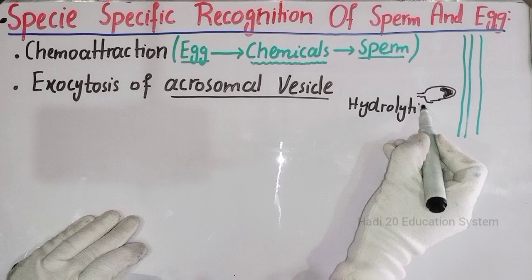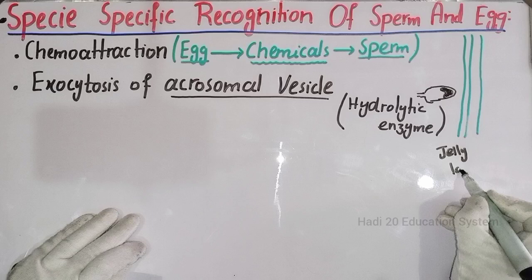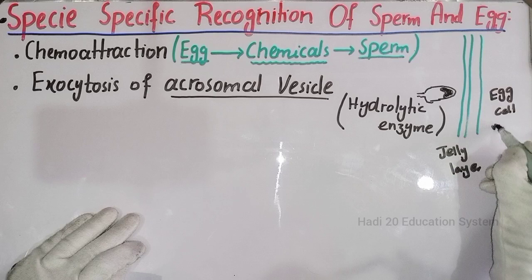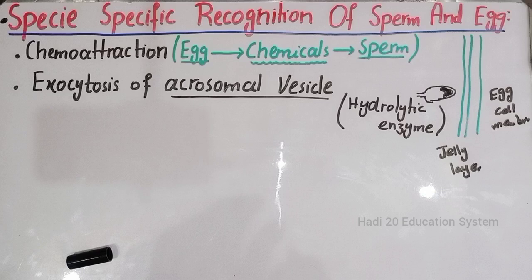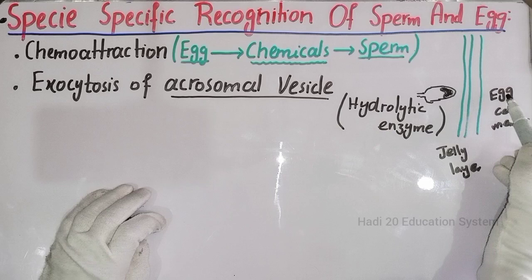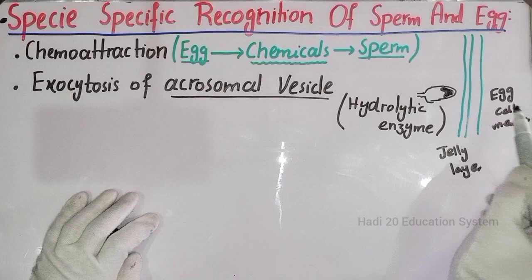Hydrolytic enzymes — this is the work of these enzymes. Dear friends, these membranes of the egg cells, which are inside the jelly layer or inside the egg cell membrane, are dissolved away by these enzymes. So these are the acrosomal vesicles and their function. Is that clear?